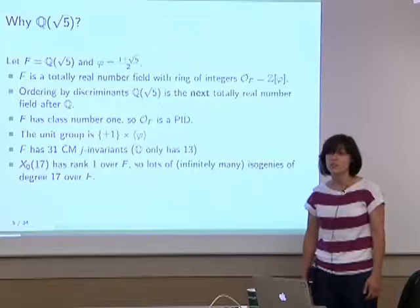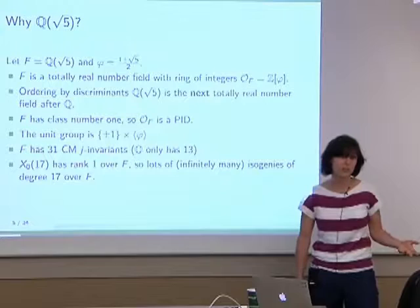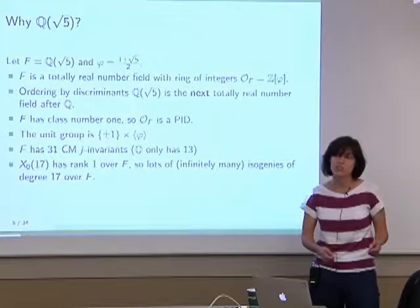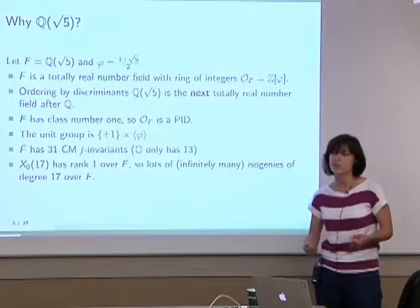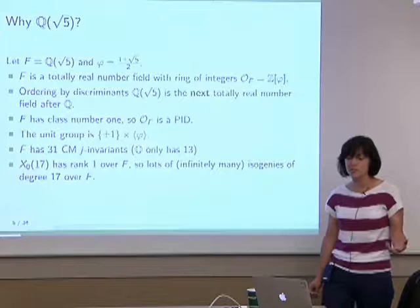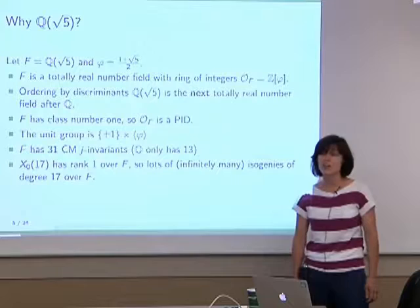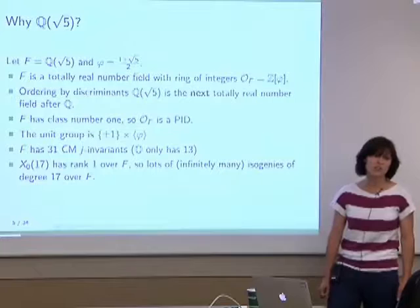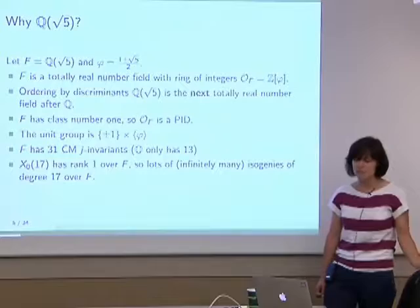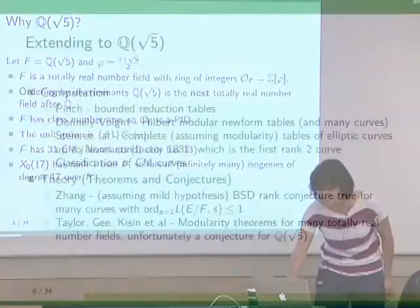Things that make Q(√5) more interesting than other class number 1 quadratic fields: it has an infinite cyclic unit group versus just ±1 for Q. This raises questions about how we order things and how to describe the minimal Weierstrass equation given the ambiguity of units. It also has the most CM j-invariants of any totally real quadratic field — Q has 13, F has 31, and all other totally real quadratic fields will have fewer. Also, the modular curve X₀(17) has rank 1 over F, giving us infinitely many isogenies of degree 17 over F.